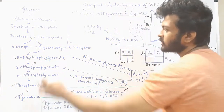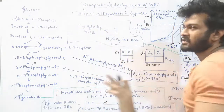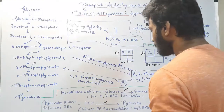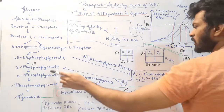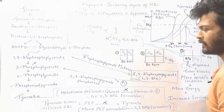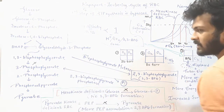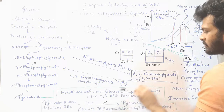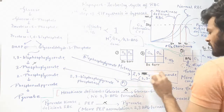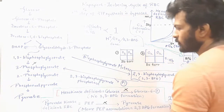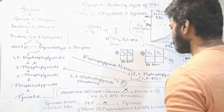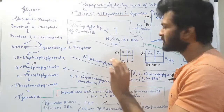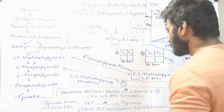Because the bisphosphoglycerate mutase diverts 1,3-BPG into 2,3-BPG, and then 2,3-bisphosphoglycerate phosphatase removes the phosphate group from 2,3-BPG to give 3-phosphoglycerate, the first step of ATP synthesis in glycolysis is bypassed in RBCs.